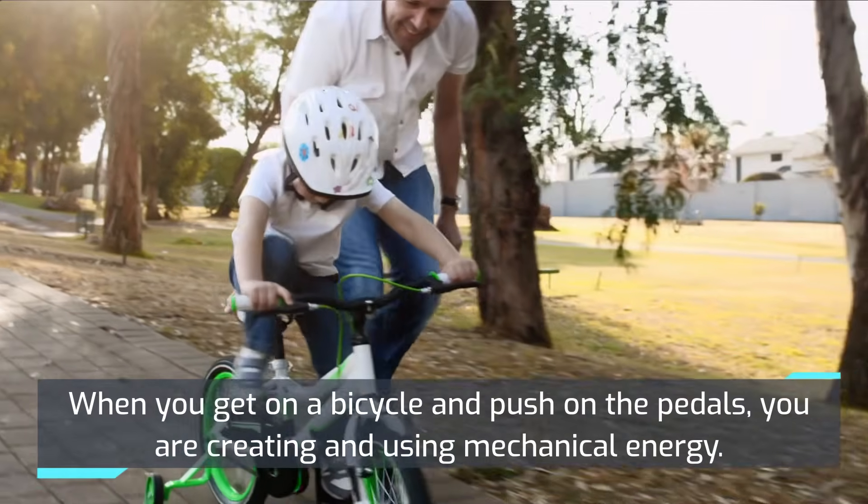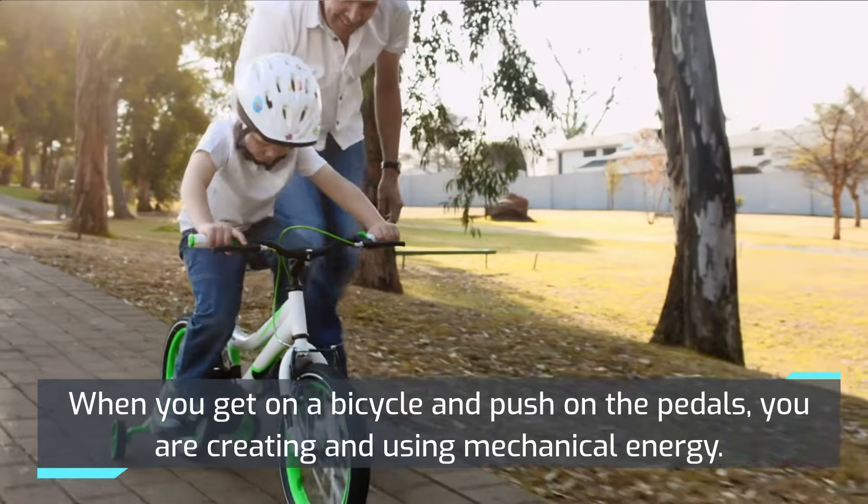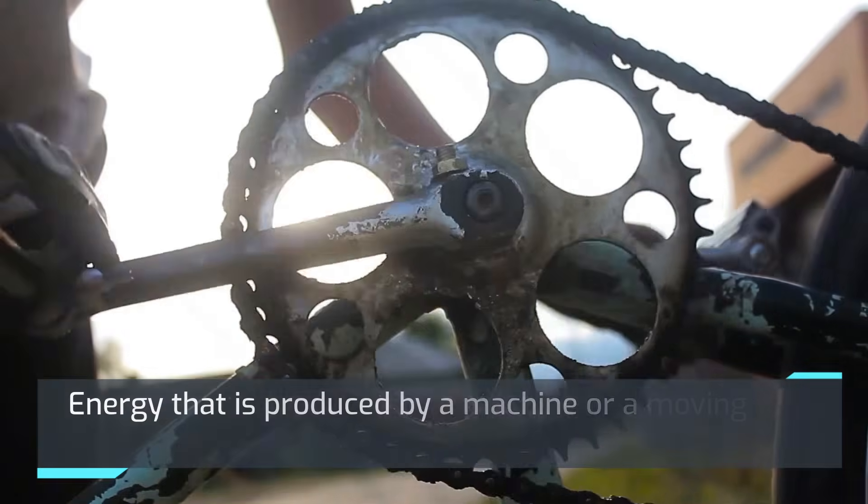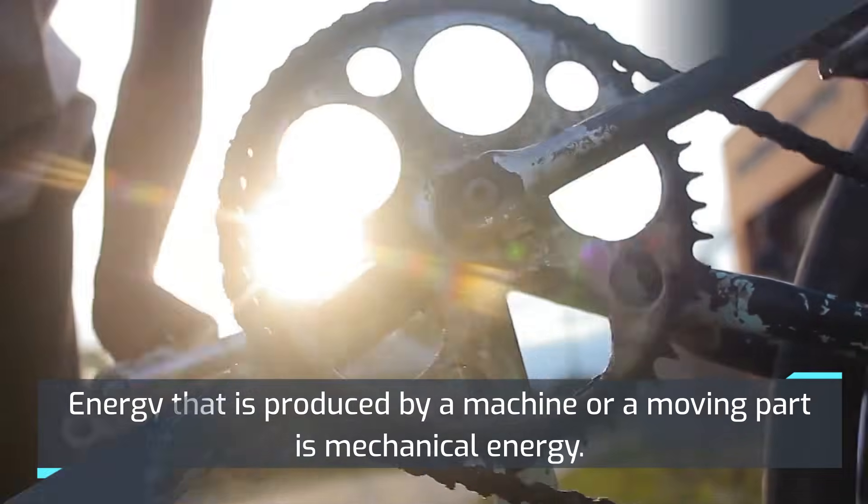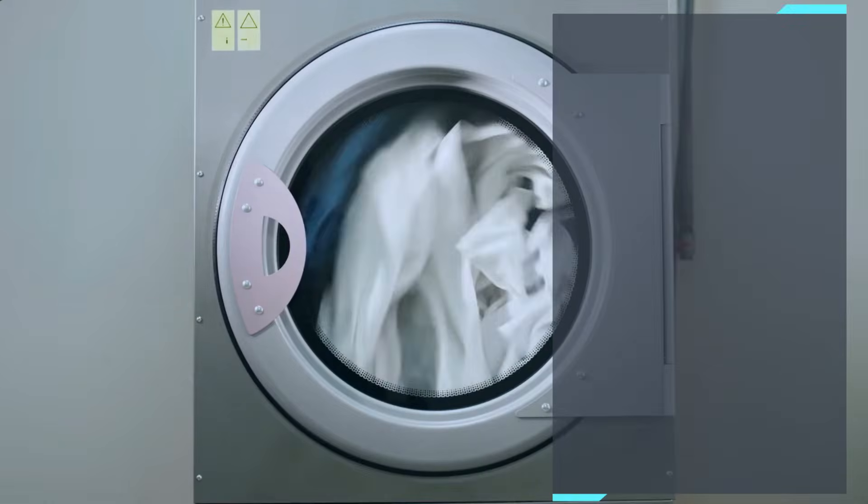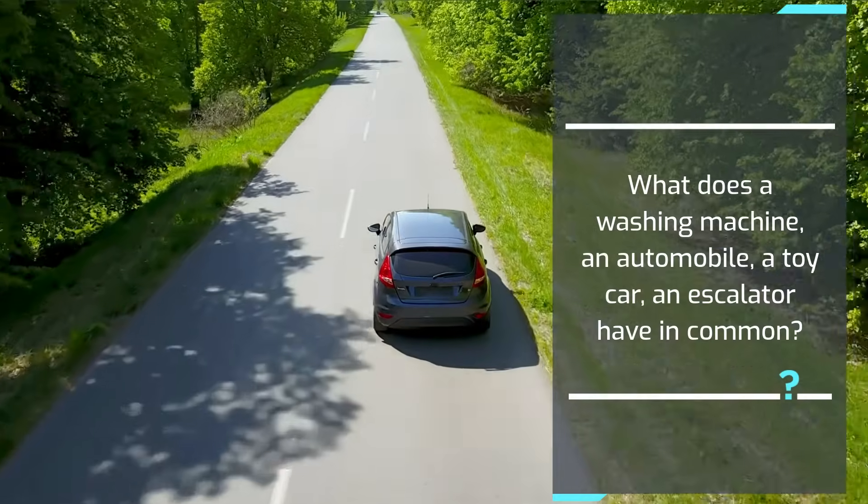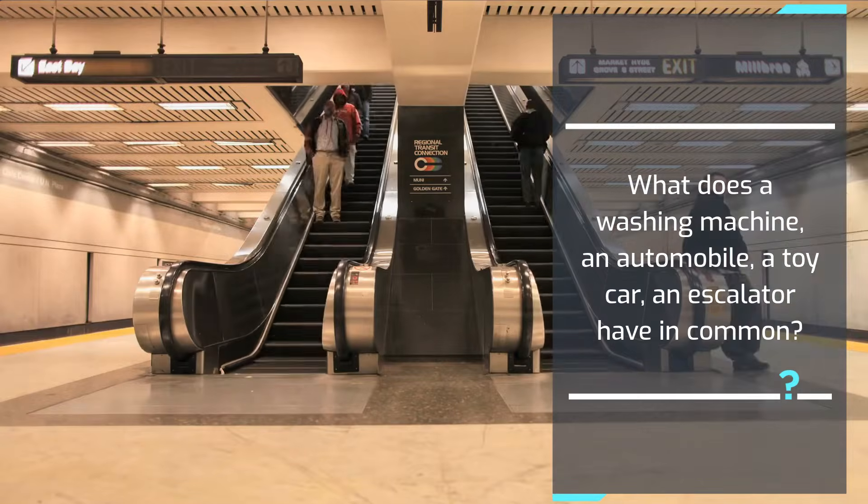When you get on a bicycle and push on the pedals, you're creating and using mechanical energy. Energy that is produced by a machine or a moving part is mechanical energy. What does a washing machine, an automobile, a toy car, an escalator have in common?